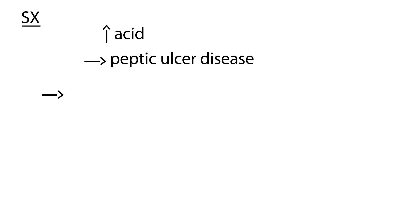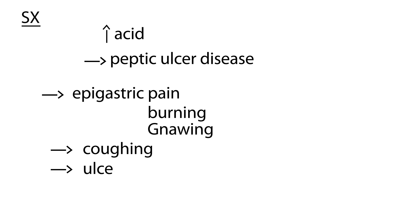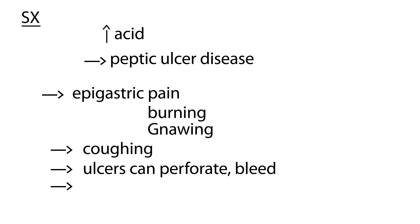The patient's symptoms will essentially be epigastric pain, which is pretty severe and is described as a burning or gnawing type of pain. The patient may also have coughing associated with it. These ulcers can sometimes perforate and also bleed. About 50% of patients with ZE syndrome will also have symptoms of diarrhea along with the peptic ulcers.